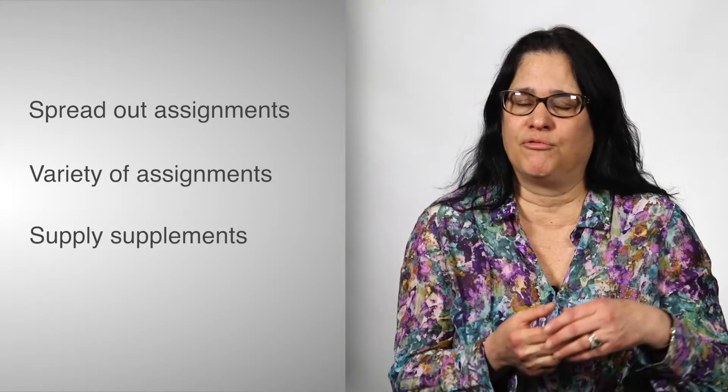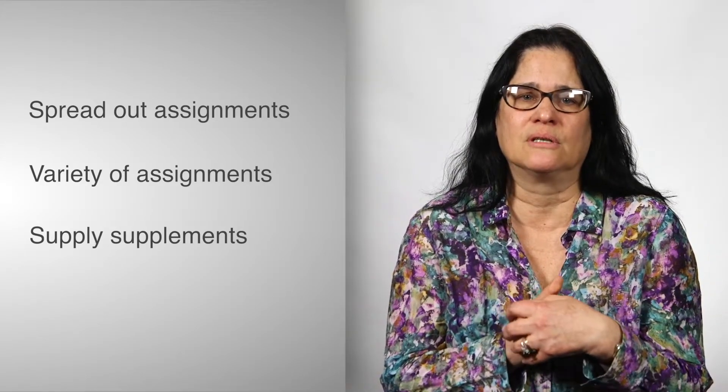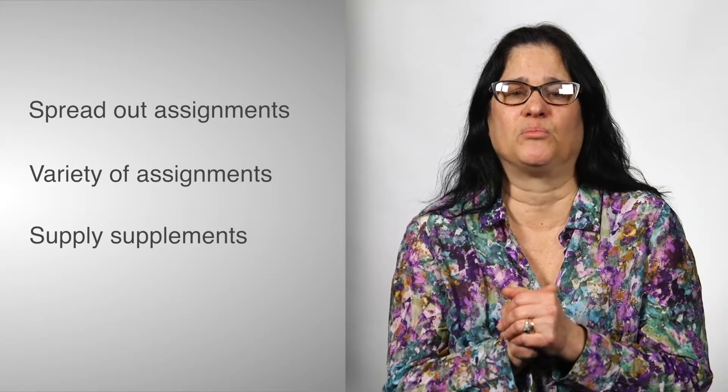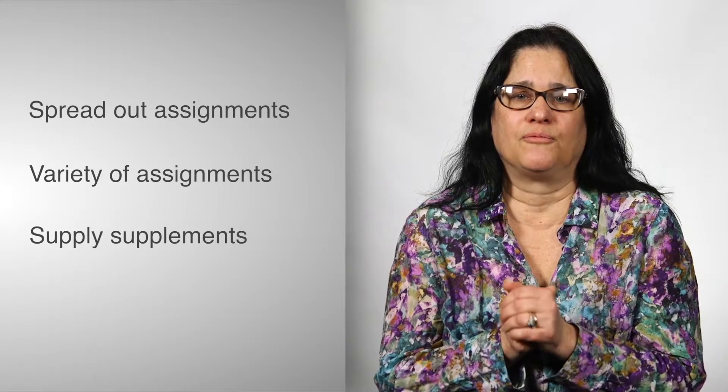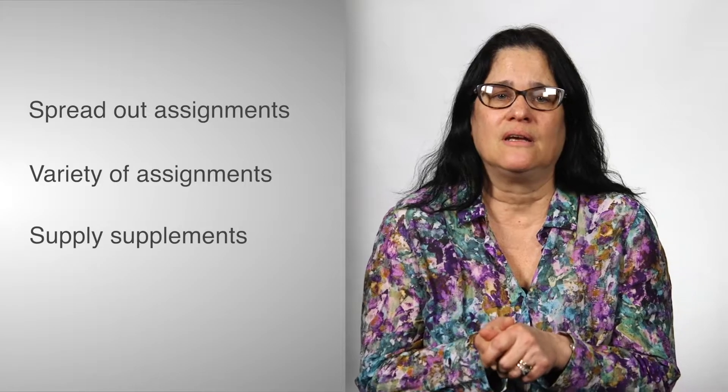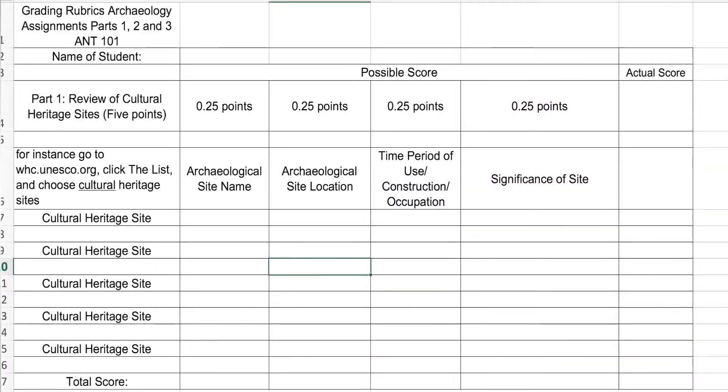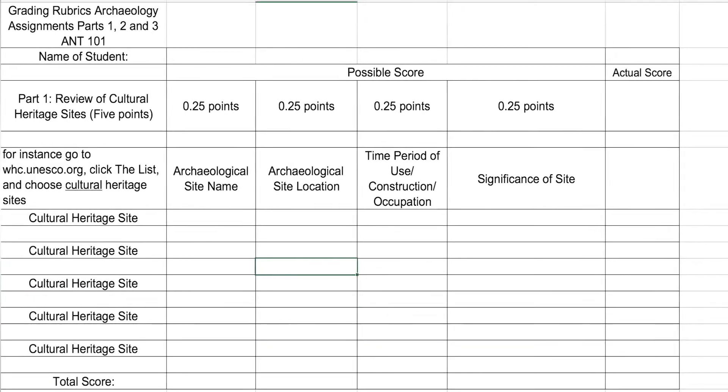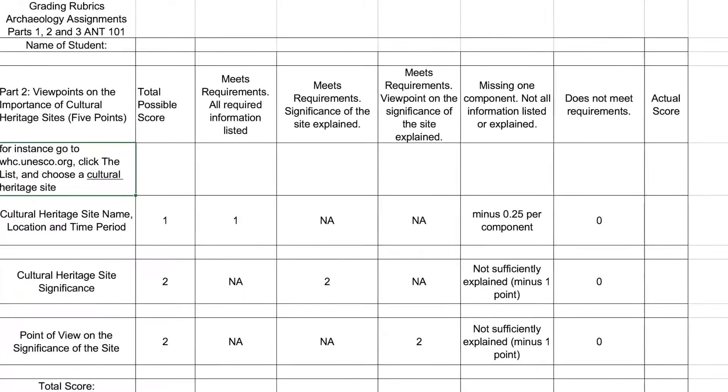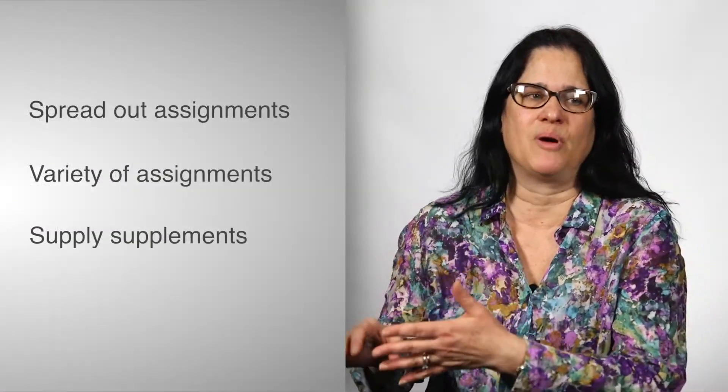So they can follow right along the grading rubrics and see how they'll be scored on the different parts. For instance, in the archaeology part, there are three parts to the assignment, and each part has its own grading rubrics. So they can look at that. In some instances, they can enter their answers right into the grading rubrics and easily see how much each component is worth.